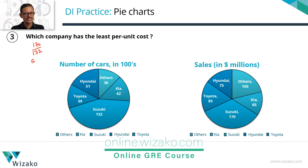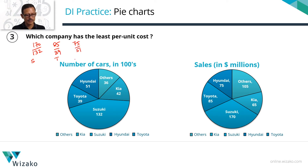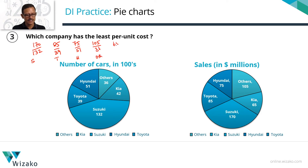Let's list the per unit cost fractions for all five manufacturers. For Toyota: 85 upon 39. For Hyundai: 75 upon 51. For Others: 105 upon 36. For Kia: 65 upon 42. For Suzuki: 170 upon 132. We need to find which of these five fractions has the least value.